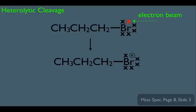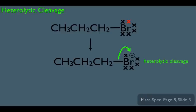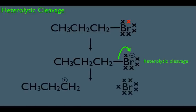Something else could possibly happen. The positive charge on the molecule has the ability to attract electrons — specifically, the electrons in the adjacent bond jump up onto that positive charge. This is called heterolytic cleavage, meaning the bond is breaking heterolytically. As a result, you end up with a carbocation fragment and a Br fragment. In the mass spec, it is the charged structure that gets detected.